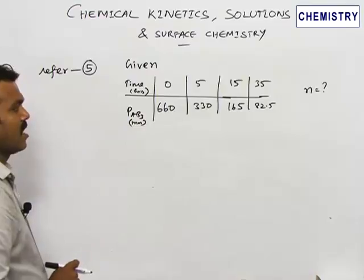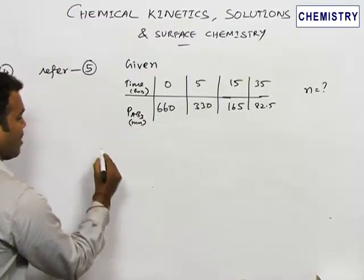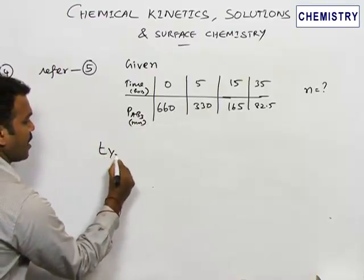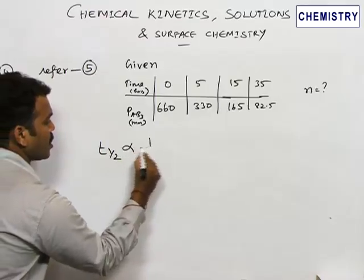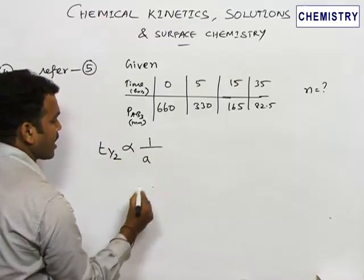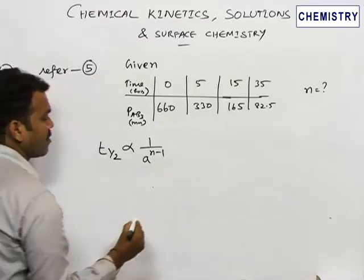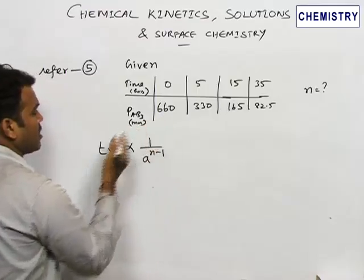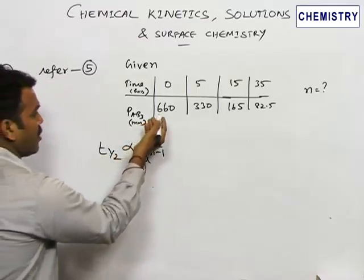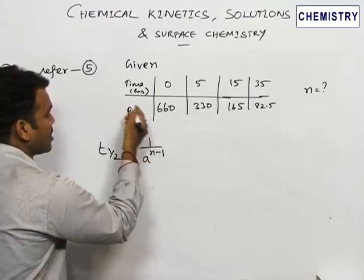Using that, we have to find out what is the order of the reaction. You know very well half-life period is inversely proportional to the concentration of the reacting substance power n minus 1. And in this case, instead of concentration, we can use pressure because pressure of the reactant is given here.